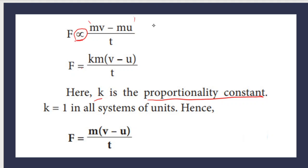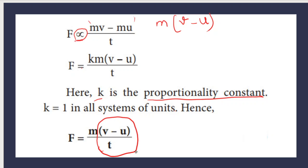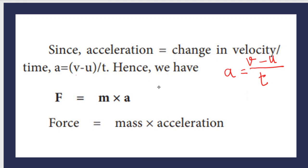The value of k equals 1 in all systems of units. Substituting k = 1, we get F equals m times (v minus u) divided by t. Now, (v minus u) divided by t is acceleration — from 9th standard, acceleration a equals (v minus u) divided by t. Substituting this, F equals m into a. Therefore, force equals mass multiplied by acceleration. This is the mathematical expression for force.